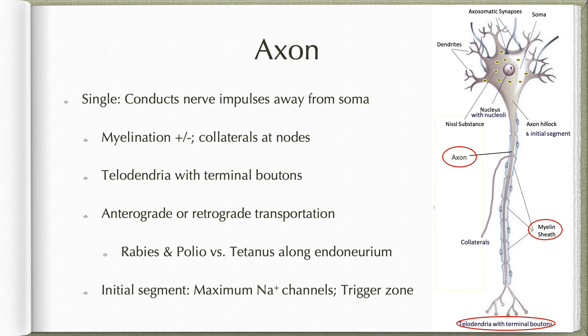Axoplasm allows for both anterograde and retrograde transportation. The retrograde transportation plays an important role in spread of rabies and polio, unlike tetanus which spreads along the endoneurium. The initial segment of the axon has the maximum sodium ion channels, which acts as a trigger zone for the beginning of action potential.